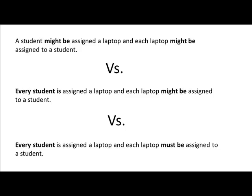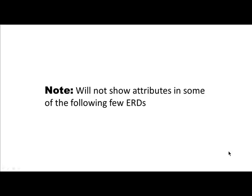The third variation is every student must be assigned a laptop and every laptop must be assigned to a student. So we're looking at how each entity must participate in the relationship. These are the three variations, and the entity relationship diagram notation will vary for each of them. In the following ERDs, we will not be showing attributes — only entity types with their names, to avoid confusion.